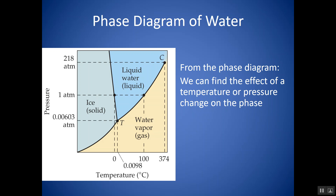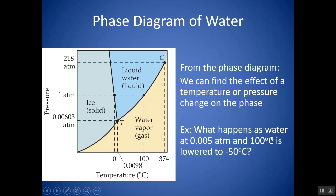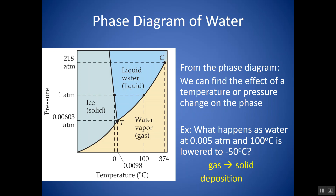You can also find the effect of a temperature or pressure change. For instance: what happens as water at 0.005 atm and 100 degrees Celsius is lowered to negative 50 degrees Celsius? The pressure stays the same — only temperature changes, so there are two points to find. At 0.005 atm and 100 degrees Celsius, we're in water vapor — gas. Lowering the temperature to negative 50 degrees, we move from gas into solid. That phase change is called deposition.